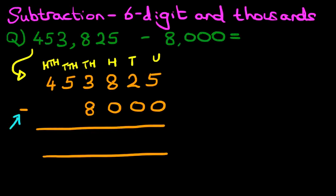And we always start with the column on the right-hand side first. It's relatively easy. What is 5 minus 0? Well, that remains as 5. The tens column, 2 minus 0, that's quite easy, it's 2. The hundreds column, 8 minus 0, again that remains as 8.